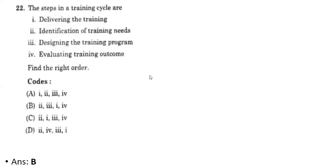Twenty-second question: the steps in a training cycle include — first, identification of training needs; second, designing the training program; third, delivering the training; and fourth, evaluating the training outcome. Therefore for the 22nd question option B is the correct one.